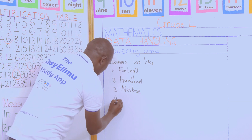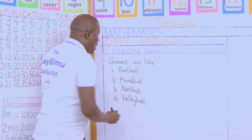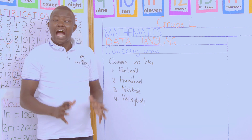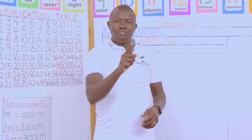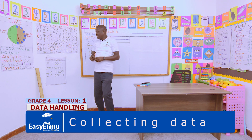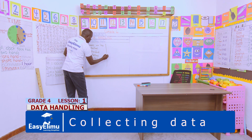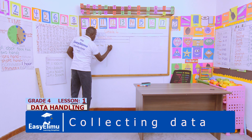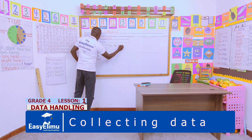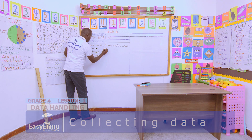Now out of the four games, I would like to find out how many of us like playing football. How many of us like playing football? We have a number — 11. So we write here: those who like football — the number of those who like football — we have gotten 11 for football.